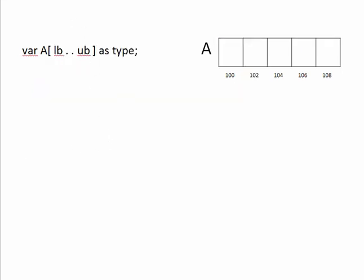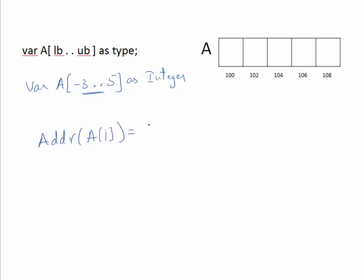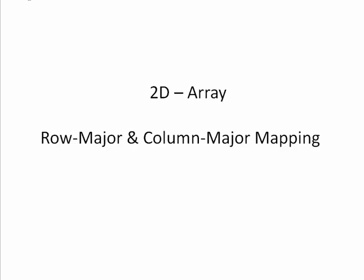Before C, some languages allowed indices starting from any value, for example an array declared from minus 3 to 5. In that case, the formula for address of a[i] is: L-naught + (i − lower_bound) × W. This covers any arbitrary starting index. That is all for one-dimensional arrays; now let us move to two-dimensional arrays.